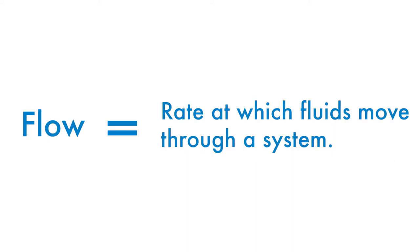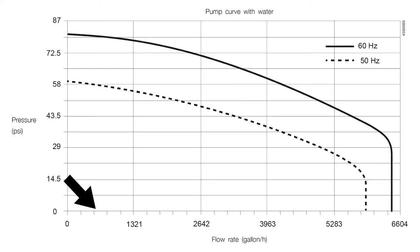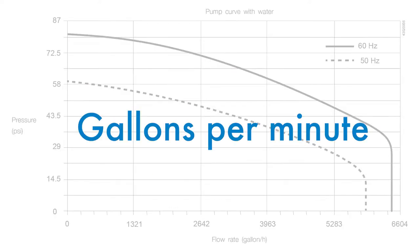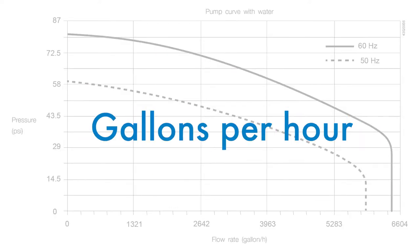Flow rate is the other important specification. It is the rate at which a pump can move a volume of water through a system at a given pressure. Flow is typically indicated on the horizontal axis in units like gallons per minute or gallons per hour.